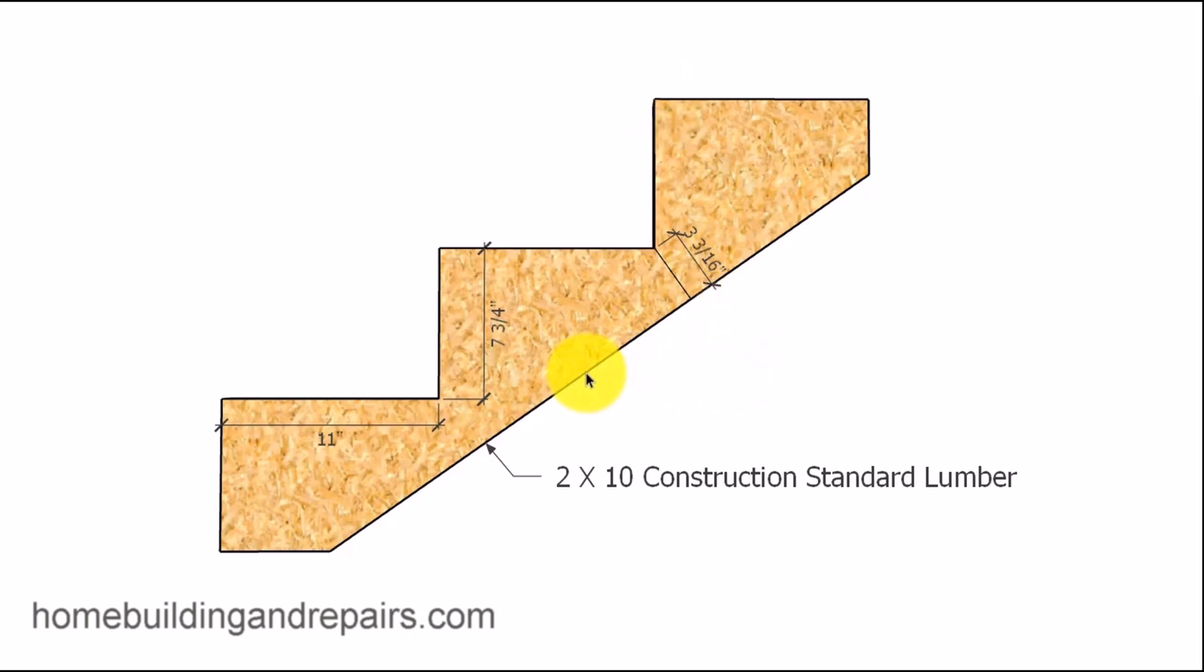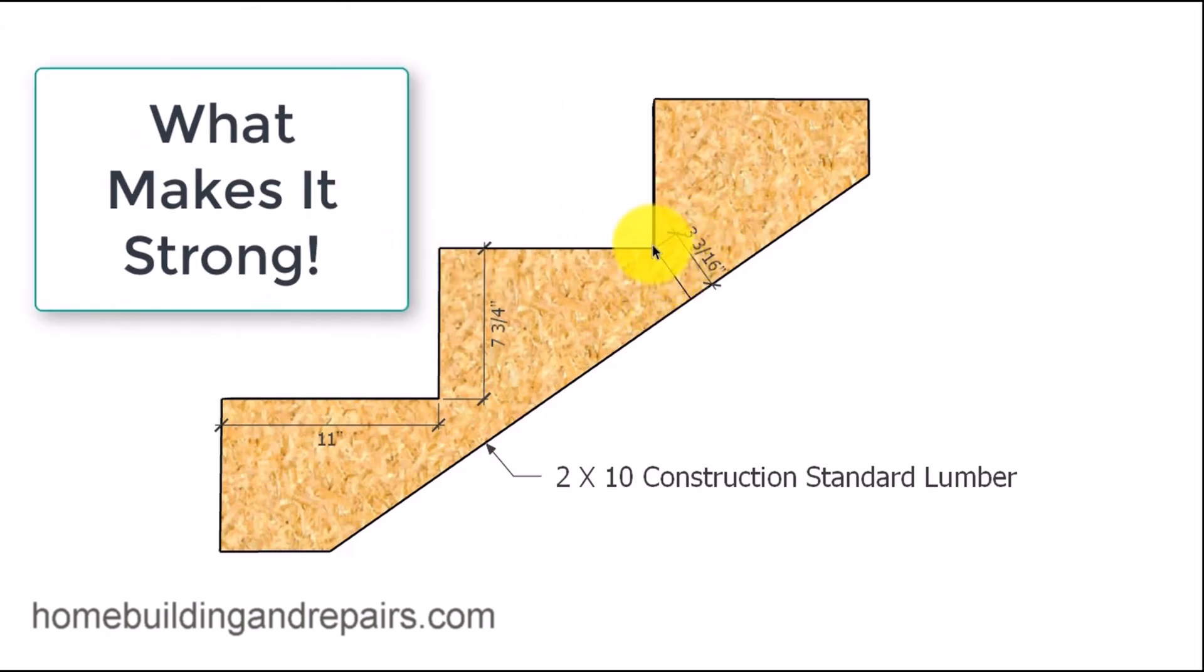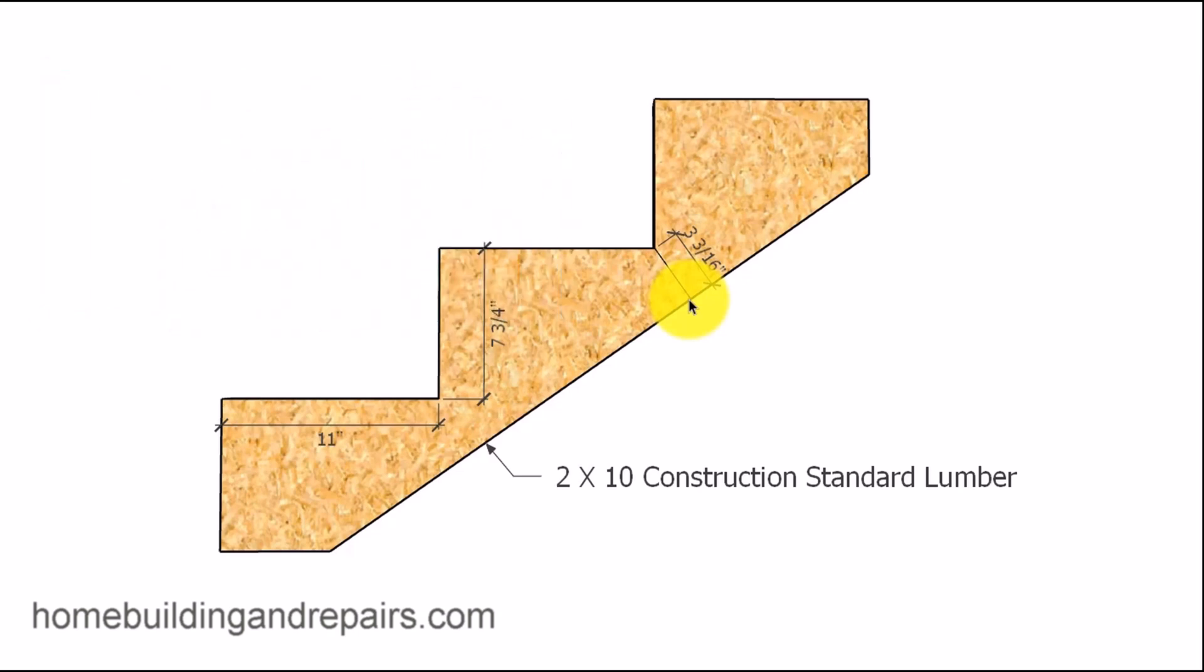Now here's a 2x10 stair stringer with a seven and three quarter inch riser and an 11 inch tread. And it has about a three and an eighth inch, three and a quarter inch. We used to call this the meat of the stair stringer. You know, this isn't very much. This is less than a 2x4. And I'm not suggesting that this set of stairs will ever fall apart.